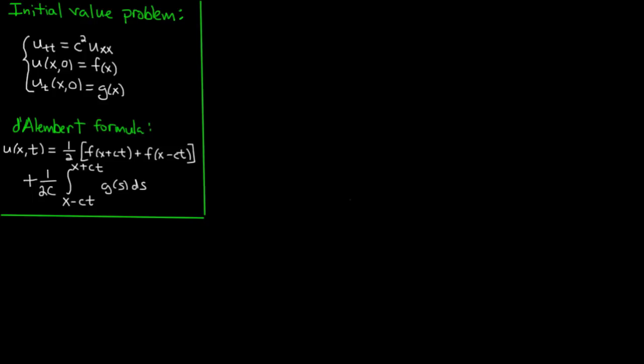It's finally time to look at some specific examples of solutions to the wave equation. What we're going to do here is use the d'Alembert formula that we derived in the last video and basically plug in different values for the functions f and g so that we get the solution to this initial value problem. And then we'll look at the solutions and decide if they make sense.